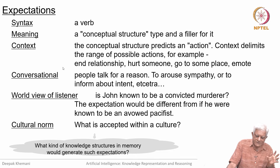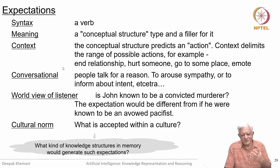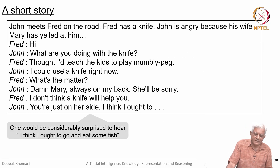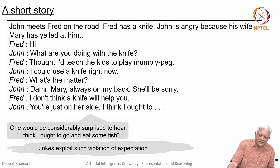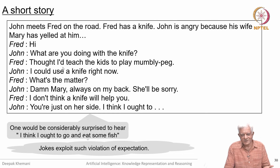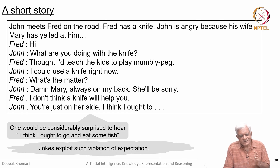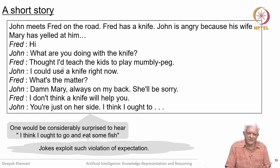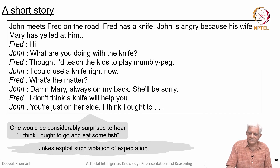Roger Schank asks what kind of knowledge structure and memory would generate such expectations — how would a program, listening to a story, be able to say 'this is what I expect to see next'? If you heard 'I think I ought to go and eat some fish,' you would be very surprised, and jokes exploit such violations of expectations. What is important is that we do generate expectations when we listen to stories, and we are interested in knowing what kind of knowledge in the heads of agents would be useful in generating such expectations. Let us take a break at this point and continue our discussion.